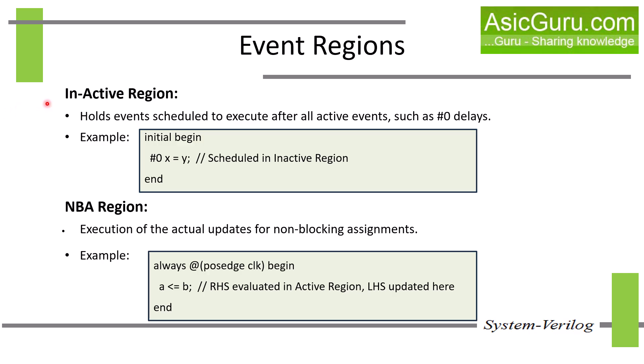Next is the inactive region. This region holds events which are scheduled to execute after all active events, such as #0 delays. For example, events which are supposed to be executed in the active region but have an explicit #0 delay control are suspended from the active region and scheduled into the inactive region of the current time slot. An example of this is: #0 x = y — this event is scheduled in the inactive region.